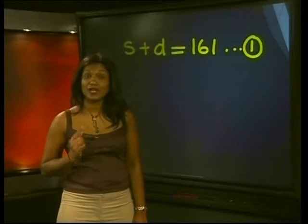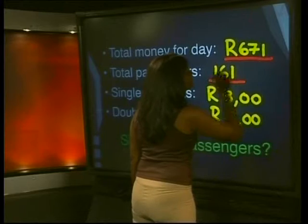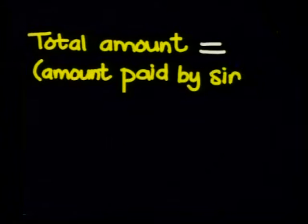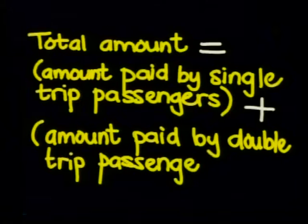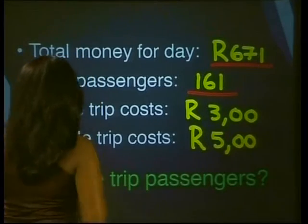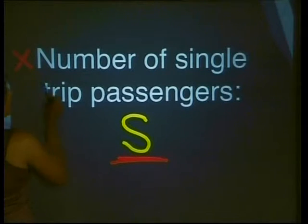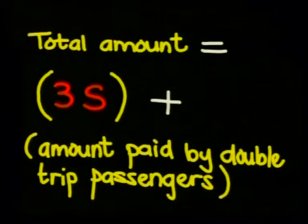What other information can we use? We know that the total amount of money that he made for the day was 671 rand. Let's set up a word sentence to show this. The total amount is equal to the amount paid by all the single trip passengers plus the amount paid by all the double trip passengers. Now how much did the single trip passengers pay? We know that a single trip costs three rand multiplied by the number of single trip passengers which we know was S. So the amount paid by single trip passengers is 3S.